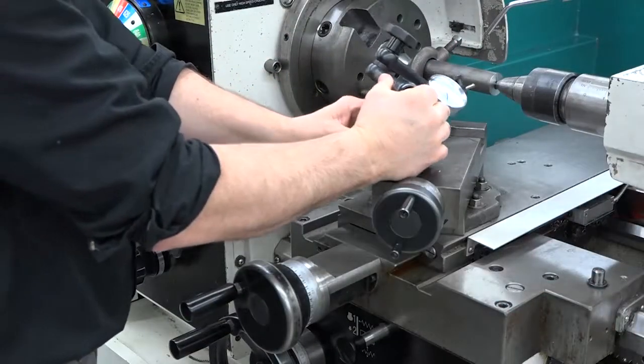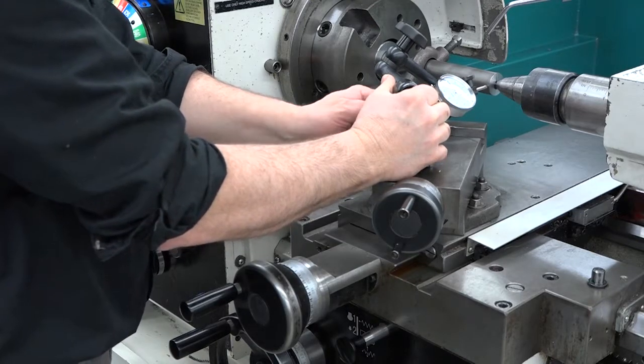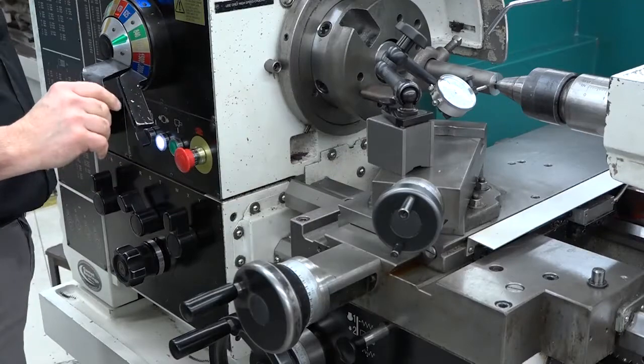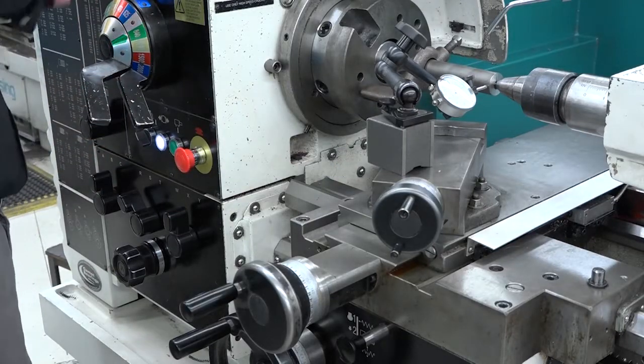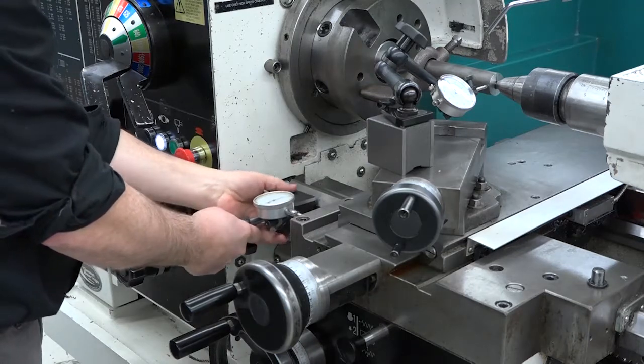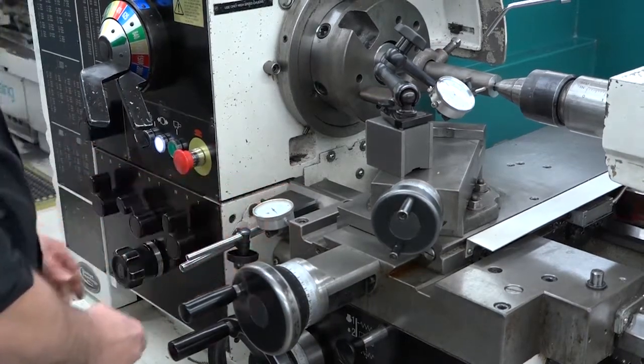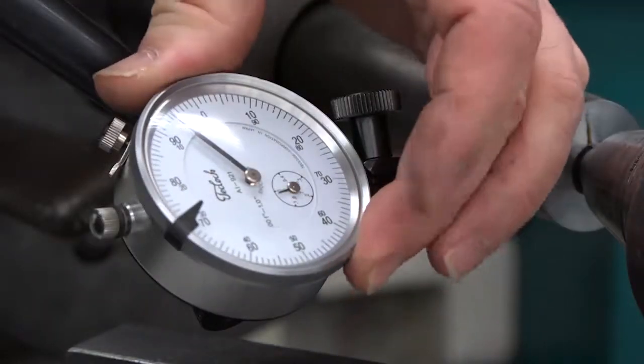Check the tailstock offset using the indicator method. While this typically requires two indicators, you can use one if the lathe is equipped with a digital readout. Set the tip of one of the indicators at the center on the workpiece. Set the other to measure the amount of carriage travel. Reset both indicators to zero.